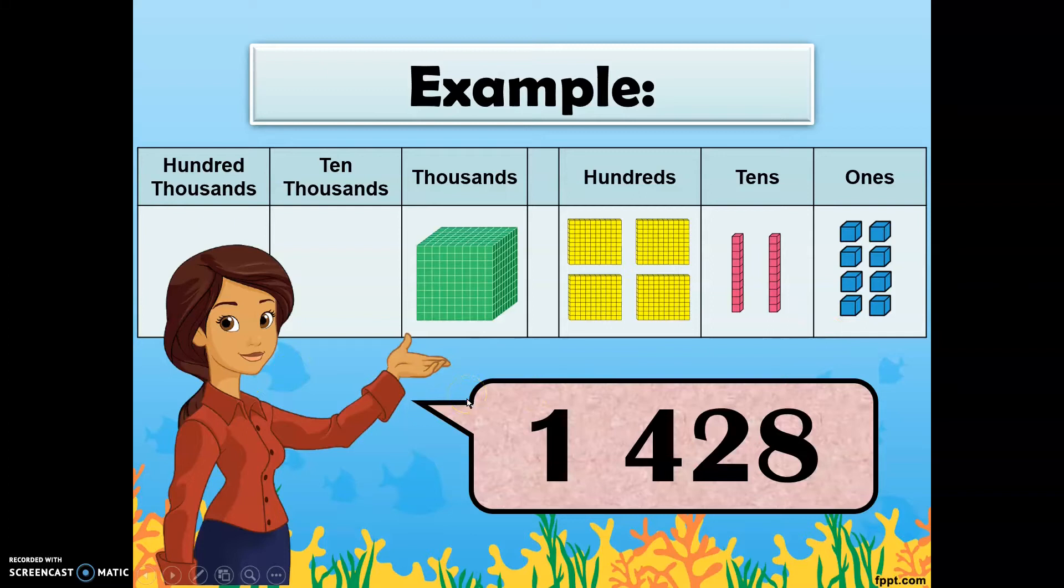Now, this number symbol is read as 1,428. We start reading from the highest place value, which means from left to right.